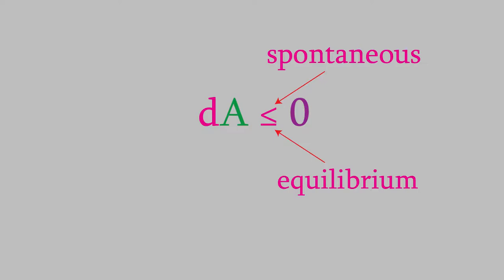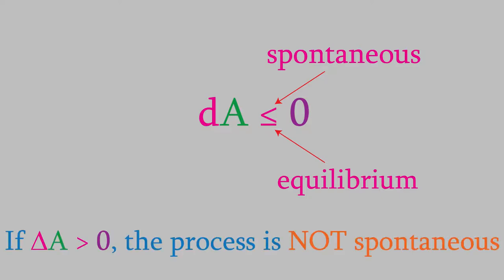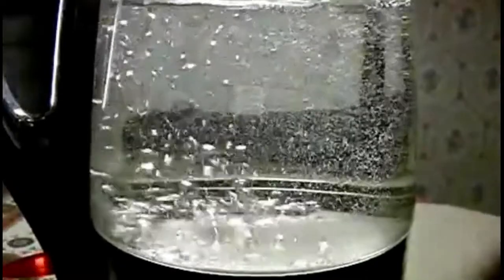Notice that if delta A is greater than zero, that doesn't mean the reaction is impossible, just that it isn't spontaneous. If we want such a reaction to occur, it will be necessary to add energy to the system.